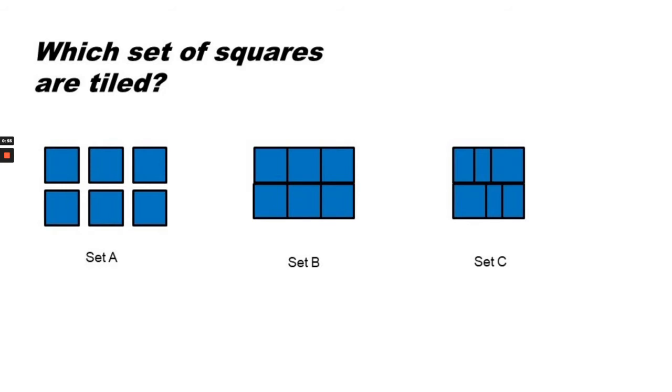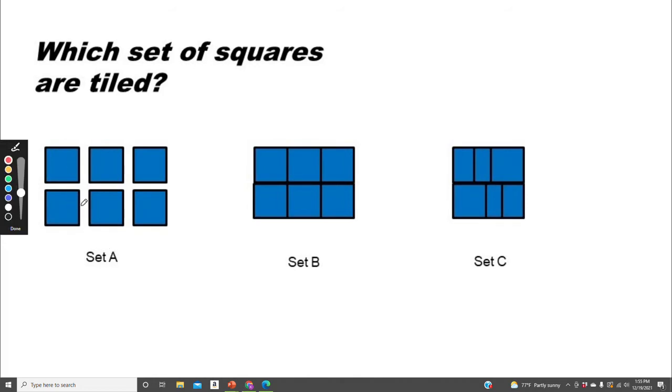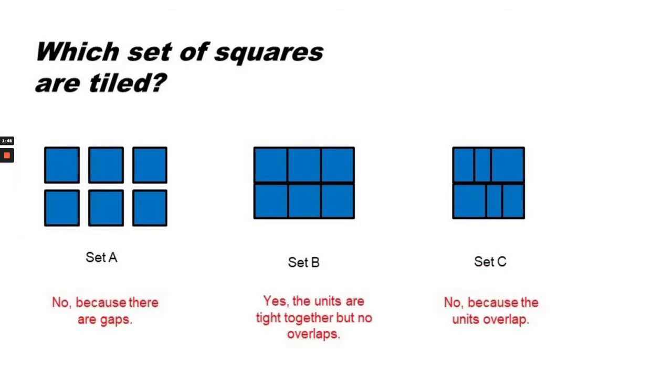Remember there should be no gaps and no overlaps. So which of these sets of squares are tiled? Let's look at Set A. I notice it has gaps, and to be tiled it must have no gaps and no overlap. So Set A is not tiled. Set B seems to be showing all of each square with no gaps or overlap, so I'm thinking maybe Set B. But first, let's look at Set C. Okay, so I'm noticing that all the squares are not completely showing. It looks like they're overlapped, so it's not Set C.